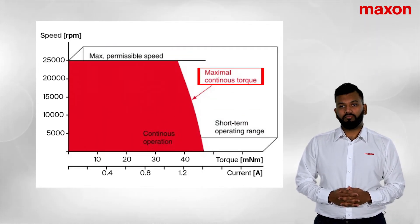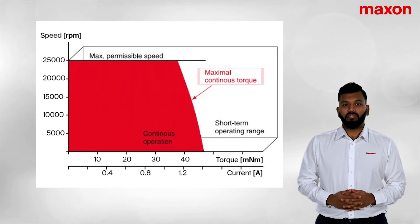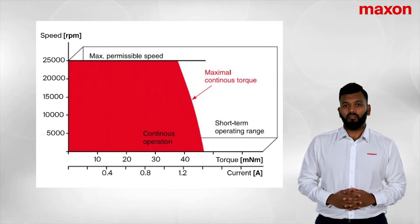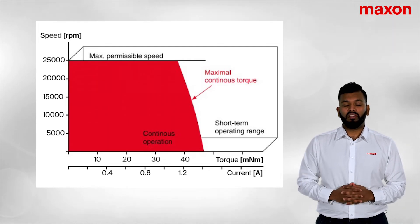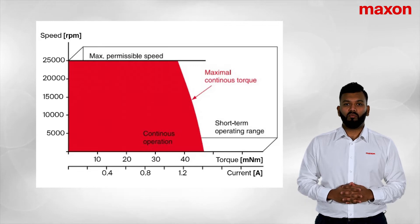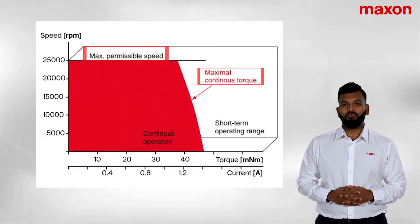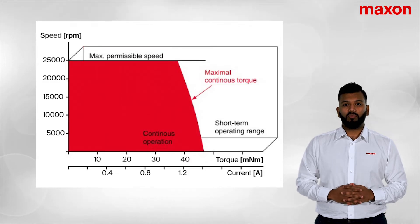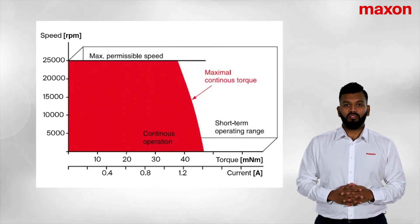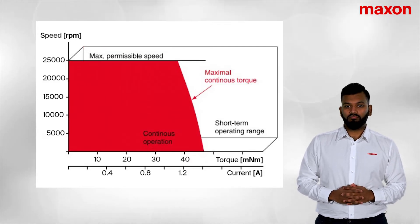If we look at the permanent operating range — the red shaded area on the graph — within this range you can run a motor continuously without any issues. The only limiting factors are the maximum permissible speed and the maximum continuous torque. When operating your application within this range, it is not thermally critical.